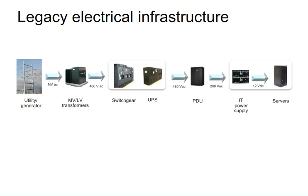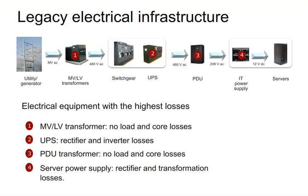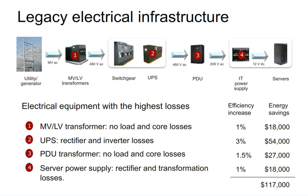Looking at the legacy electrical infrastructure: utility or generator comes in, goes through a medium voltage transformer, switchgear, UPS, into the data center as a PDU, then IT power supply, and then to the server. The four key components with the highest losses are: the medium voltage to low voltage transformer (no-load and core losses), the UPS (rectifier and inverter losses, possibly a transformer), the PDU (another transformer with no-load and core losses), and the power supplies (rectifier and transformation). By increasing efficiency in each by just one to two percent, you can quickly add up to about $117,000 on a two-megawatt data center.